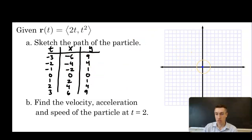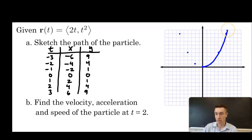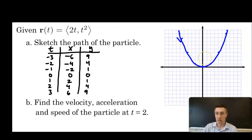Starting at the origin: ⟨0,0⟩, ⟨2,1⟩, ⟨4,4⟩, ⟨6,9⟩, ⟨-2,1⟩, ⟨-4,4⟩, ⟨-6,9⟩. The curve is going to be parabolic. We have to indicate the direction of increasing t, which moves from left to right along the space curve.